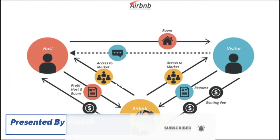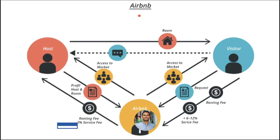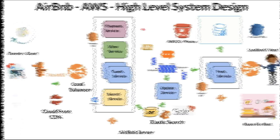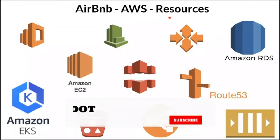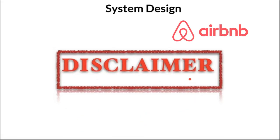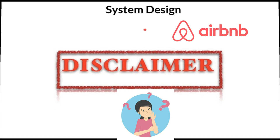Hi friends, in this video I'm going to talk about Airbnb system design. It will be useful for your technical interview. I'll be explaining high-level system design and then let's see what are the different types of AWS resources used in the system architecture. The disclaimer is this application is a little complex, so in a few minutes I will not be able to complete the entire design. Hence I'll be presenting my understanding. If you have any further questions please comment.